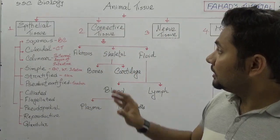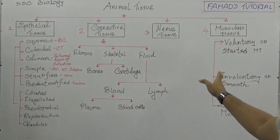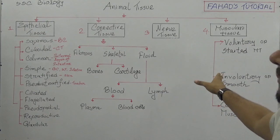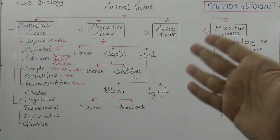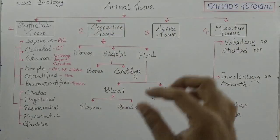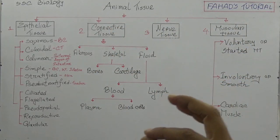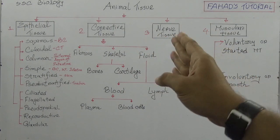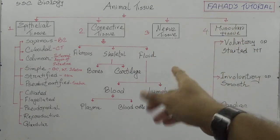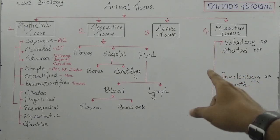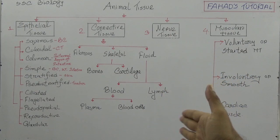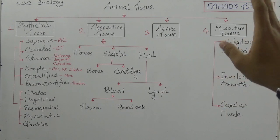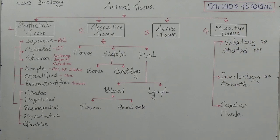To summarize, animal tissue is divided into four categories: epithelial, connective, nerve, and muscular. Epithelial tissue has 11 categories based on three groups: squamous, cuboidal, columnar; simple, stratified, pseudostratified; and ciliated, flagellated, pseudopodial, reproductive, and glandular. Connective tissue has three categories — fibrous, skeletal, and fluid — with skeletal having bones and cartilage, and fluid having blood and lymph. Blood has two compositions: plasma and blood cells. Nerve tissue involves study of neurons, and muscular tissue is divided into voluntary, involuntary, and cardiac.